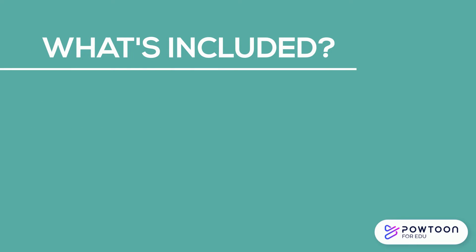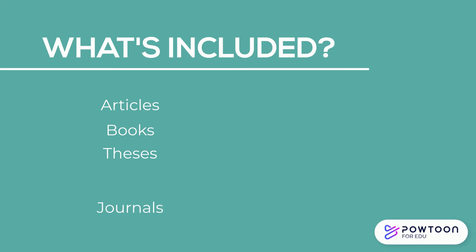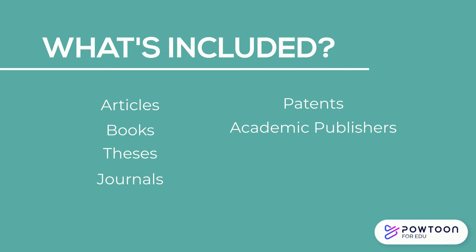Google Scholar indexes things such as articles, books, theses, journals, patents, academic publishers, case law, and institutional repositories.